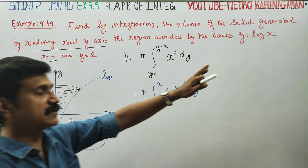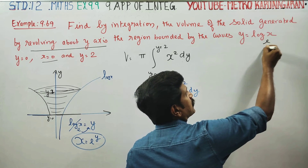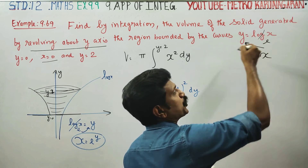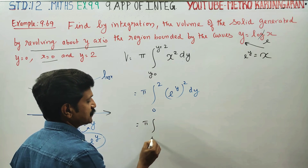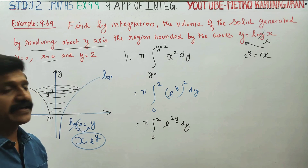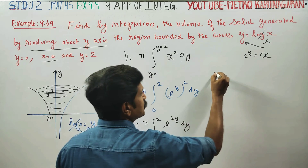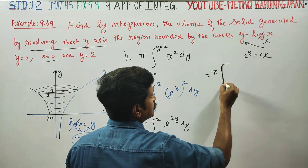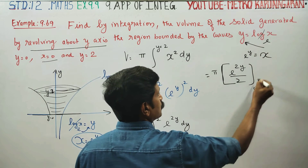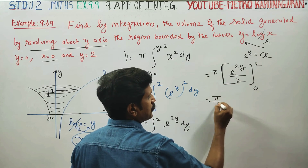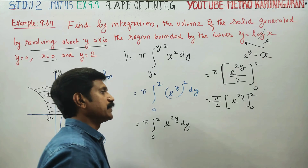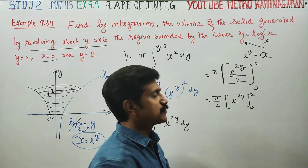Integrating e to the power 2y, we get e to the power 2y divided by 2. So the volume equals π by 2 times e to the power 2y, evaluated from y = 0 to y = 2. Applying limits: upper limit y = 2 minus lower limit y = 0.